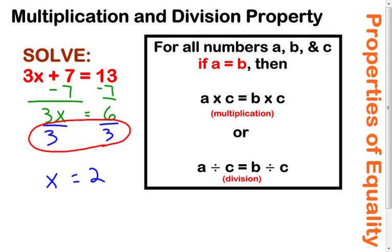Now, we could have used the multiplication property of equality. Instead of dividing both sides by 3, we could have multiplied each side by 1 third. And then you'd have had the multiplication property of equality. So multiplication and division property, really one and the same, just depending on whether you're going to multiply or divide.